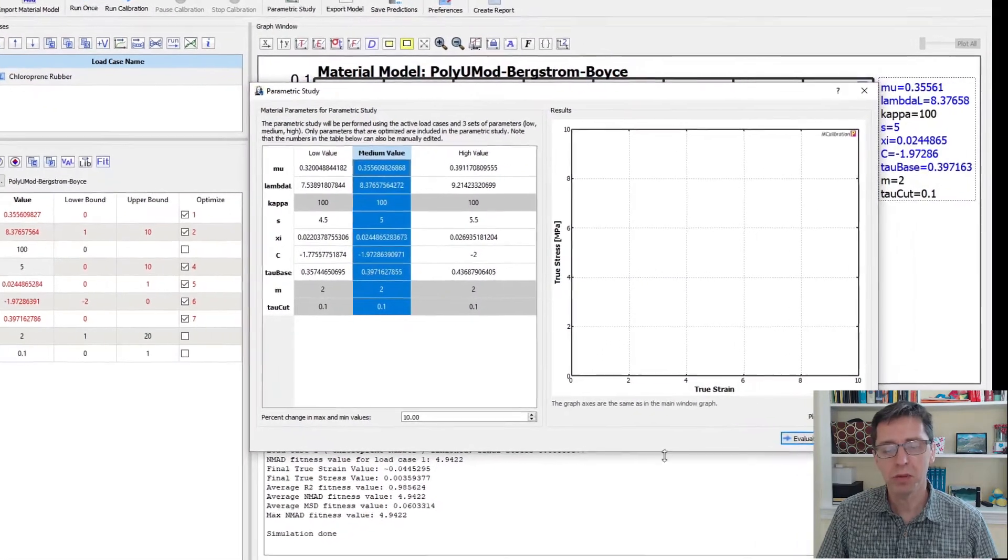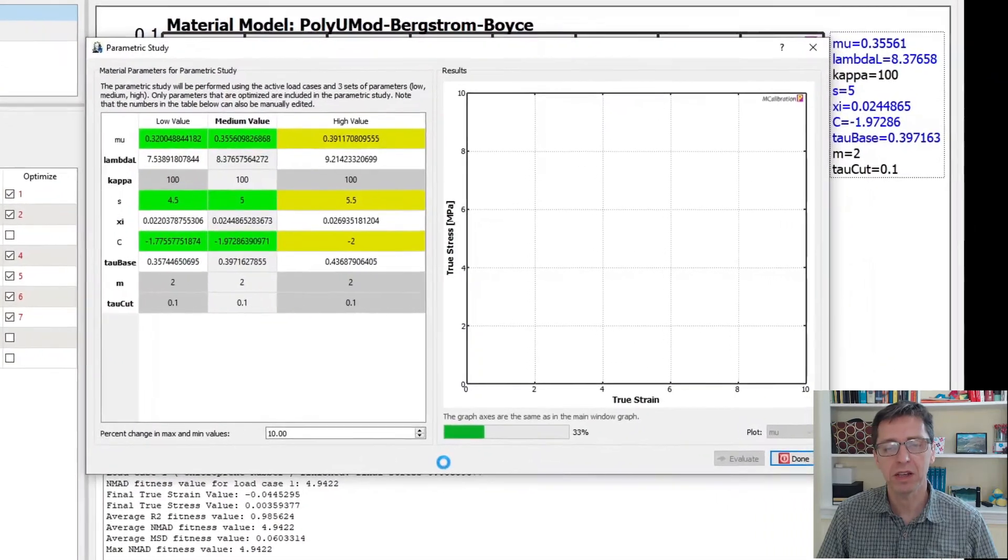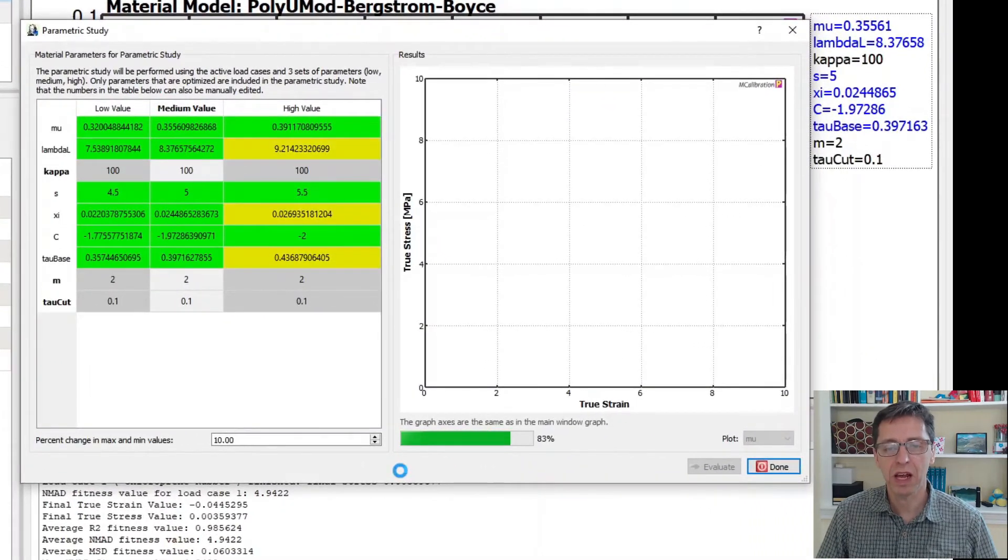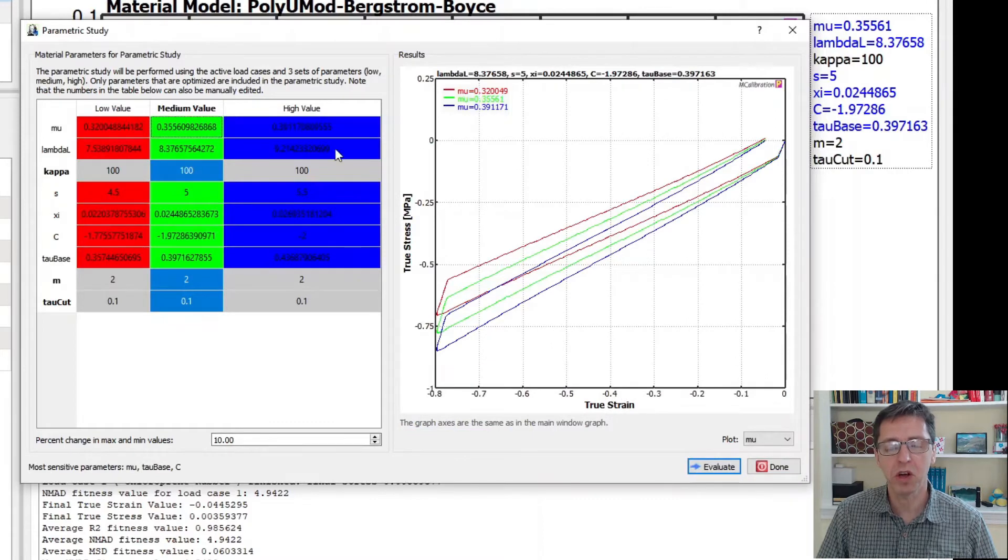So what I typically do is just click evaluate once you're in here and then mCalibration will calculate a lot of things and it changes the colors here as it's doing it.